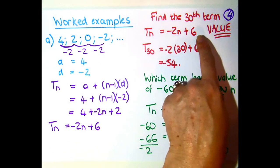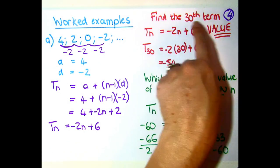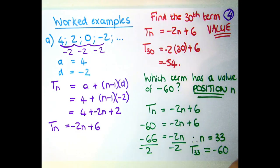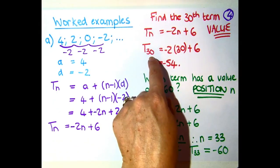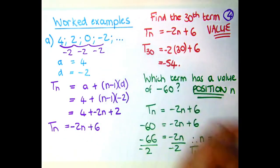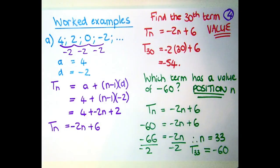When you're then finding a term from there, they're giving you the term number and they want the actual value. So you're subbing in that 30 into the n and you're getting out the Tn, you're getting out T30, the value of T30.